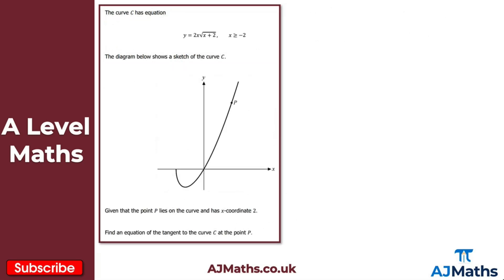For the last question: curve C has a given equation, a sketch is shown, and point P lies on the curve with x coordinate positive 2. We're asked to find the equation of the tangent to the curve at point P. First, I'll find the y coordinate of P. y equals 2x times the square root of (x plus 2), so substituting x equals 2: 2 times 2 is 4, and the square root of (2 plus 2) is the square root of 4, which is 2. So 4 times 2 equals 8. The y coordinate of P is 8.